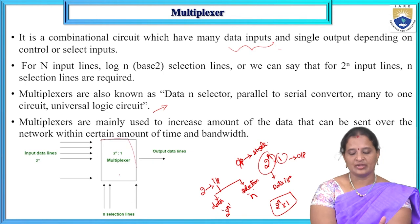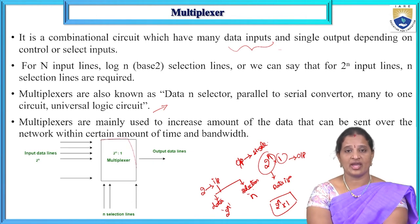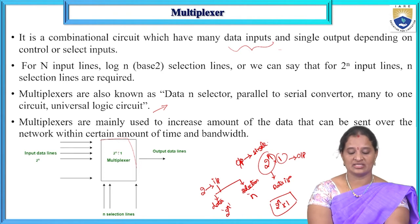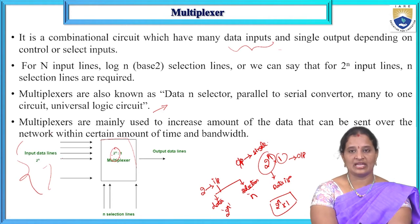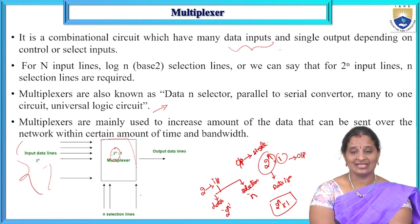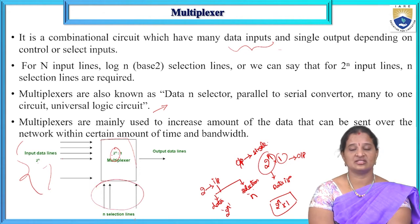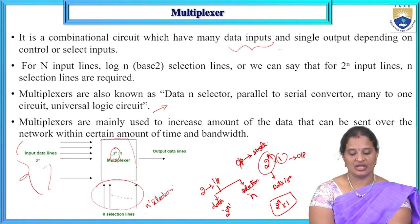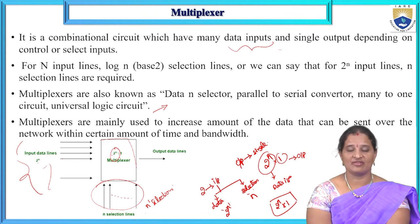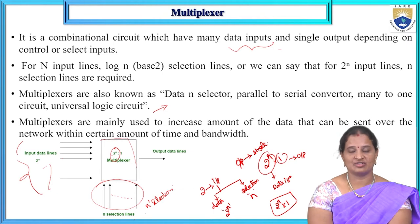This diagram is the logic symbol or block diagram for a multiplexer whose size is given by 2^N by 1, where 2^N is the number of data inputs. On one side we have the data input lines — 2^N input lines. These lines represent the selection lines: from S0 to S(N-1), totalling N selection lines, and one output line. A multiplexer has 2^N data inputs, N selection inputs, and 1 output.